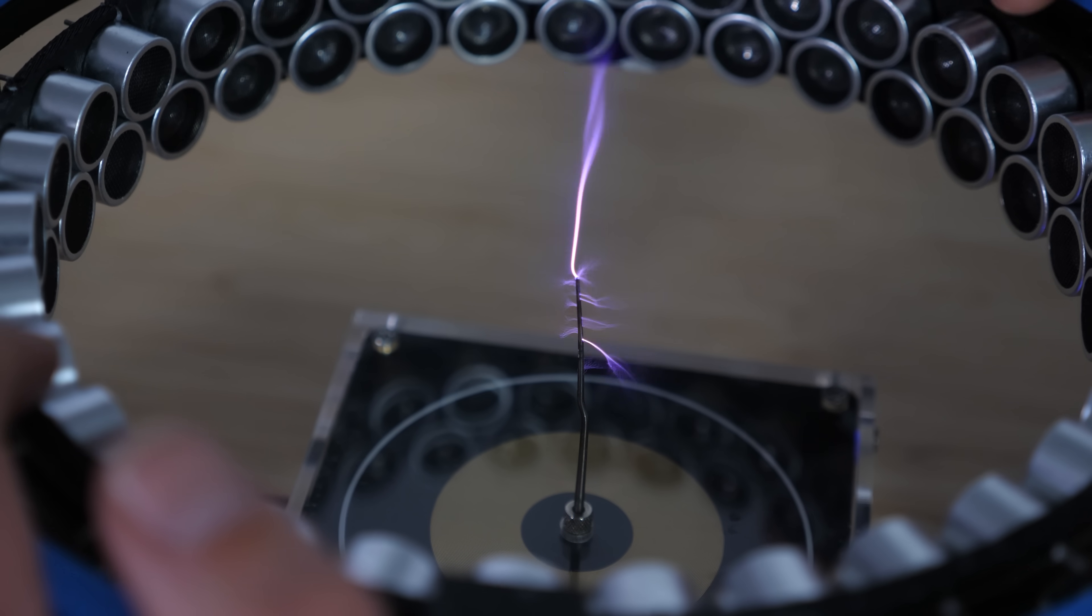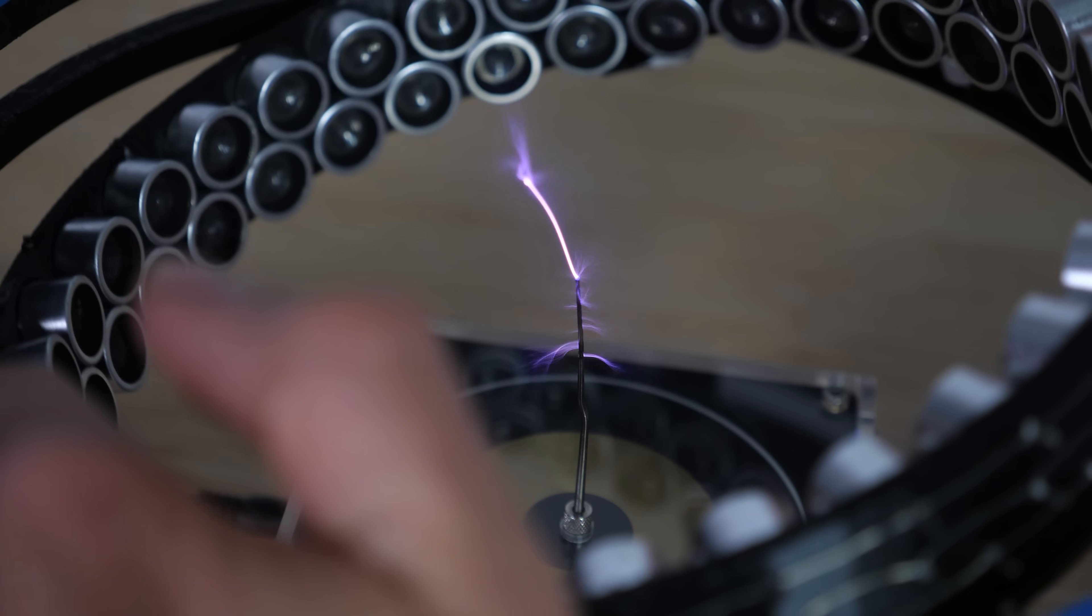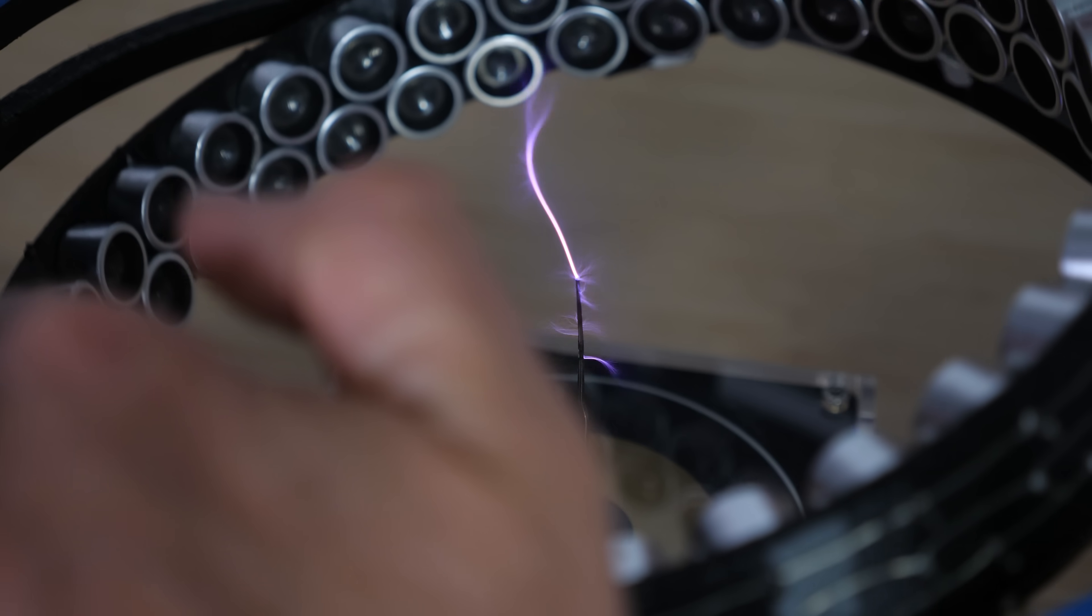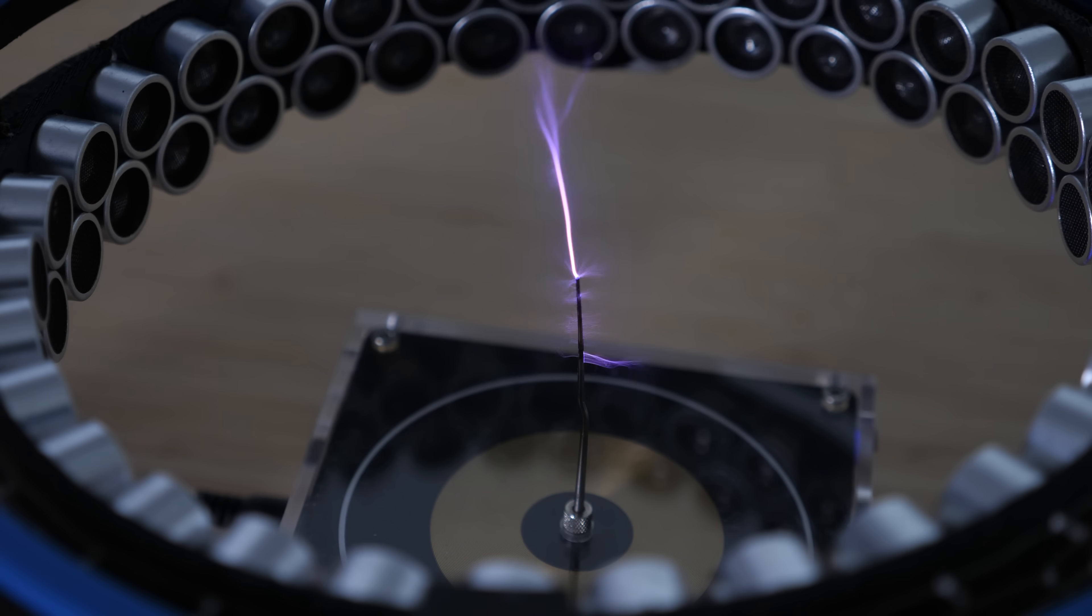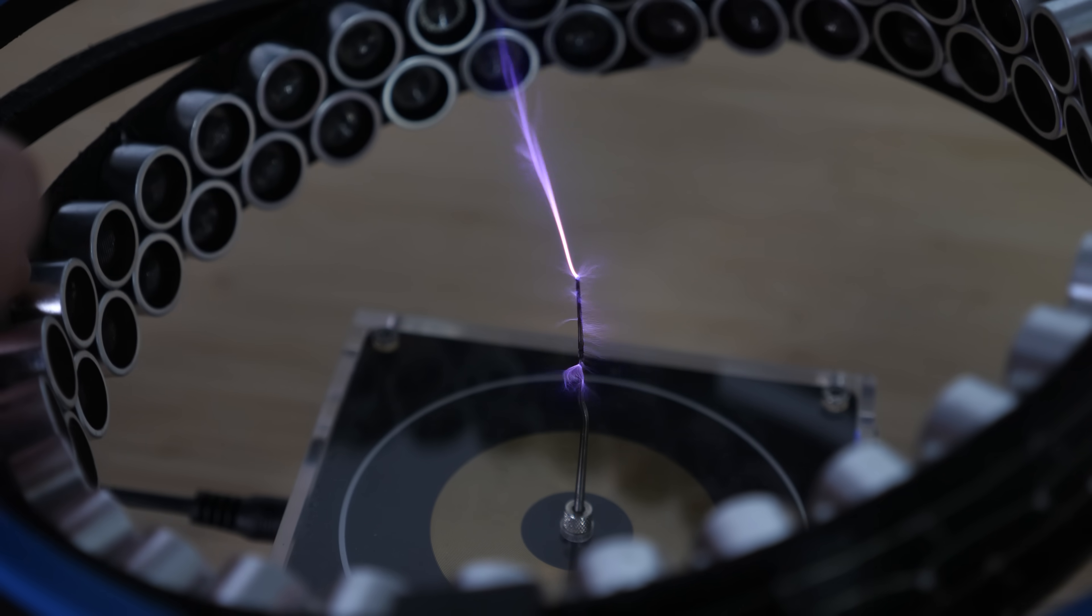I'm pulsing the Tesla coil's output around 2,000 times per second to create a rapid sequence of sparks that build up hot air. You can see how it makes a nice ordered plasma channel that gives a nice straight line directed wherever I want. Look at that.